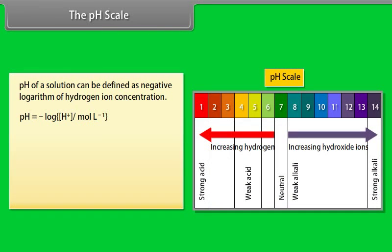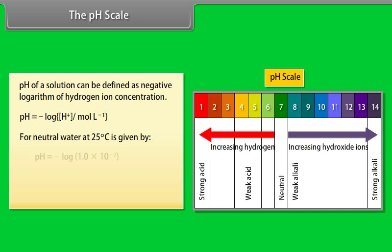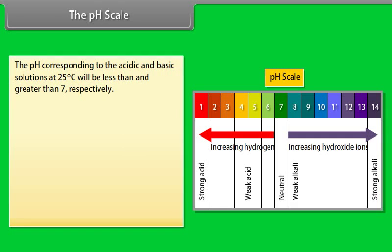The pH scale: pH of a solution can be defined as the negative logarithm of hydrogen ion concentration. For neutral water at 25°C, pH = −log(1.0 × 10⁻⁷) = 7. The pH corresponding to acidic and basic solutions at 25°C will be less than and greater than 7, respectively.